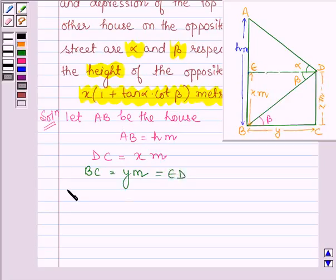Now, let us see in triangle EBD. In this triangle, we have EB divided by ED is equal to tan beta and the distance EB is equal to x meters since EB is equal to DC which is x meters.